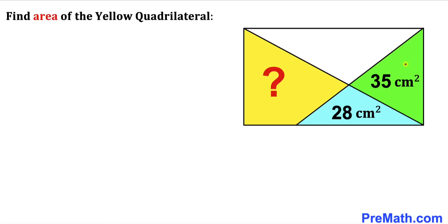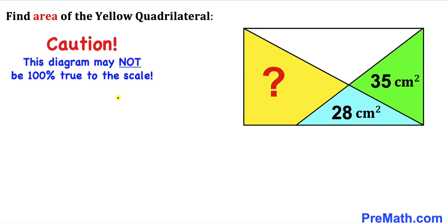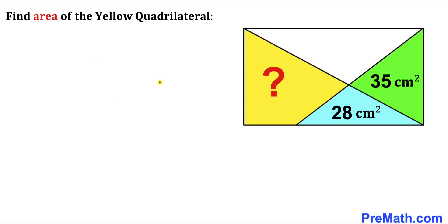Welcome to pre-math. In this video, the area of the green triangle is 35 cm² and the area of the blue triangle is 28 cm², both within a given rectangle as shown in the diagram. We are going to calculate the area of the yellow quadrilateral. Note that this figure may not be 100% true to scale. Let's get started with the solution.